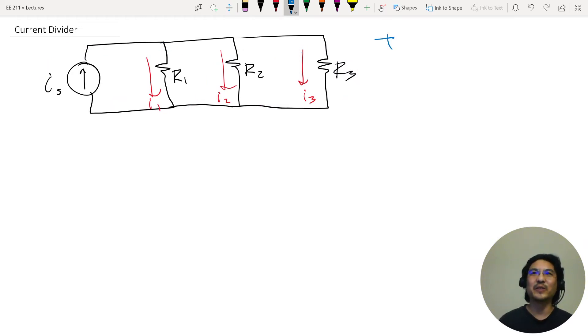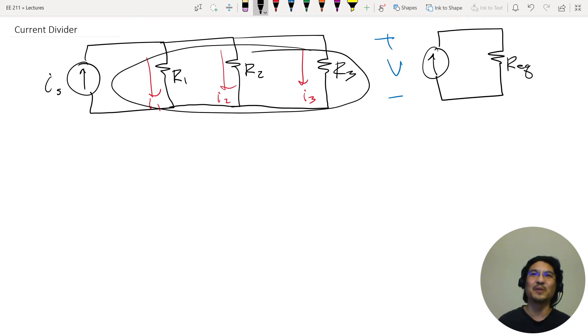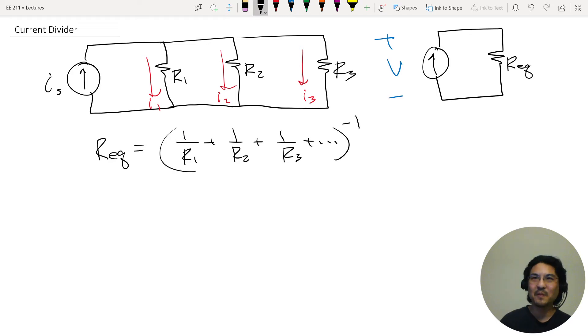So what is this voltage? We can get it by reducing this to its equivalent resistance, right? So just replace these resistors in parallel with a single equivalent resistor. In this example, however many you have, and then take the reciprocal. Okay, so now we got the equivalent resistance.